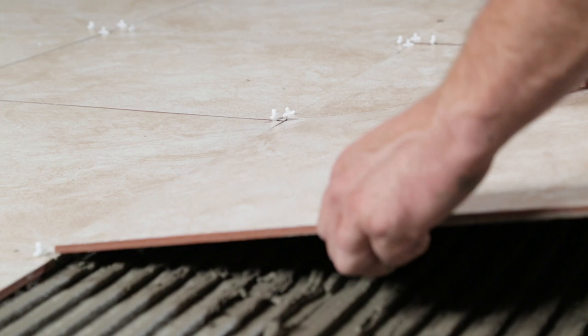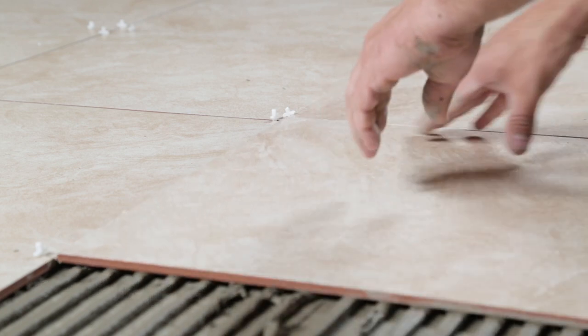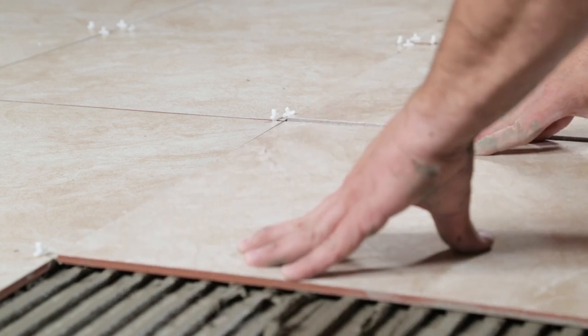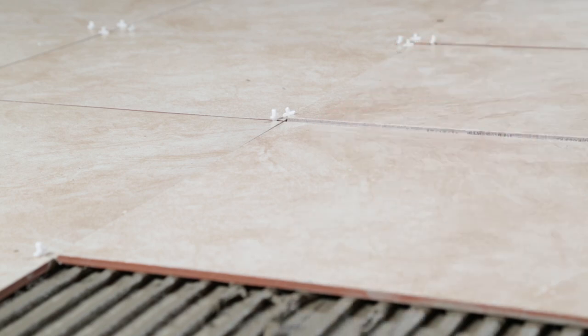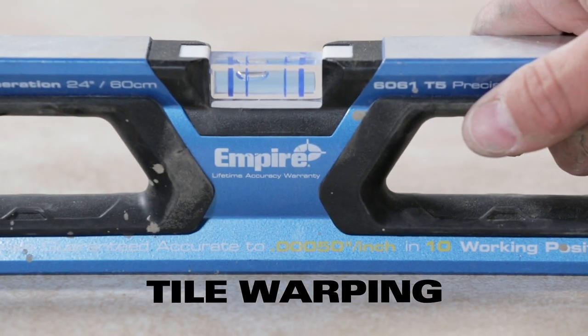Tile lippage is a variation in the height of adjoining tiles, which is a greater issue with the growing popularity of large format tile, where tile warping is more common.